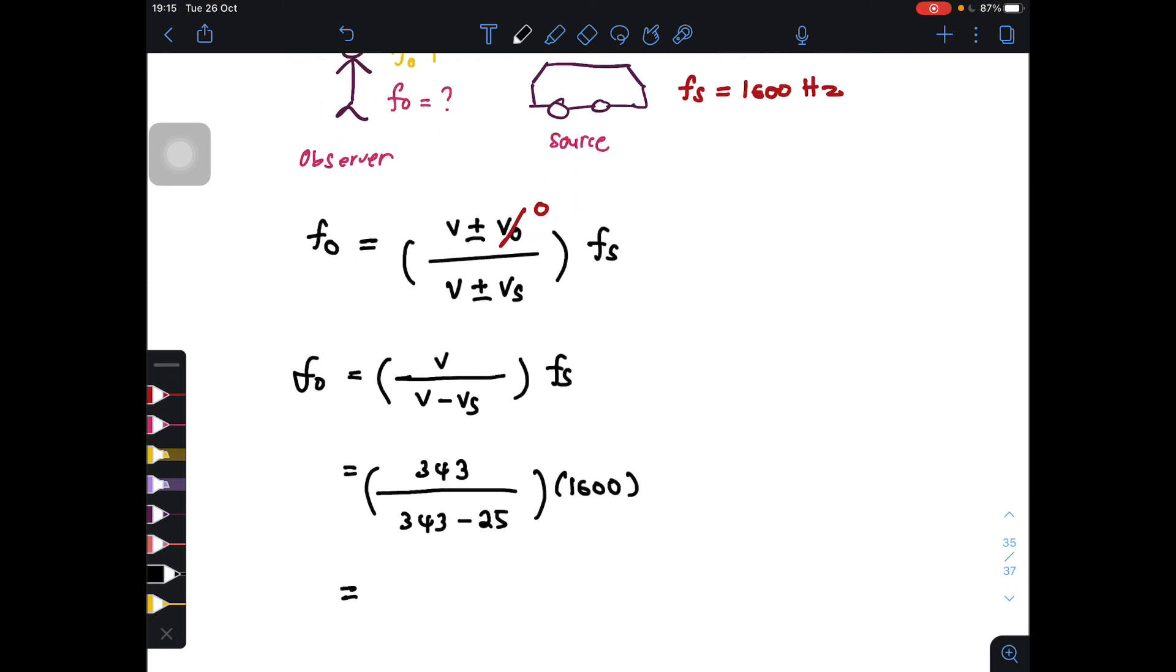just substitute that value: 343 divided by V_s which is 25, and then f_s is 1600 hertz. So it will be equal to 1725.79 hertz.